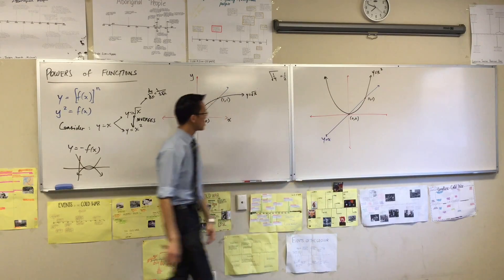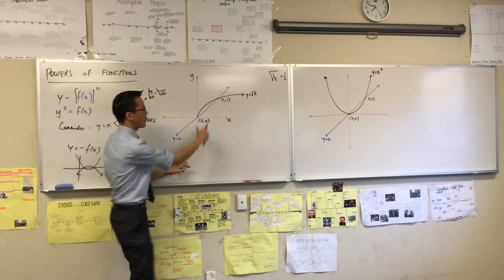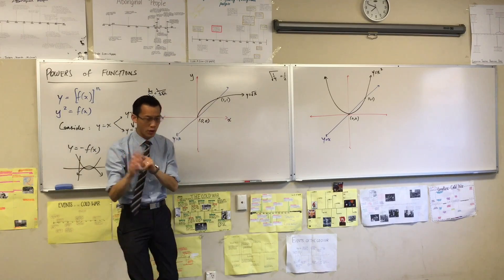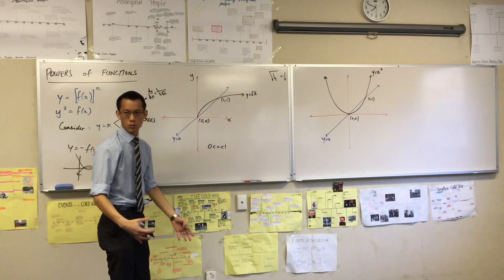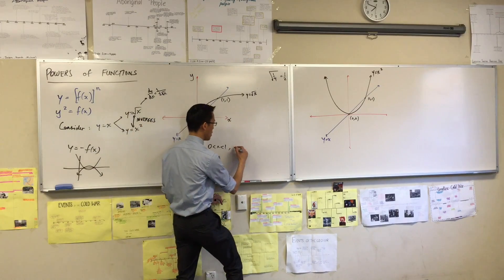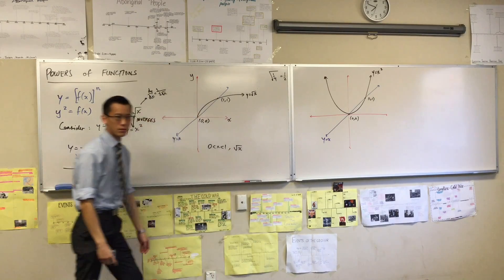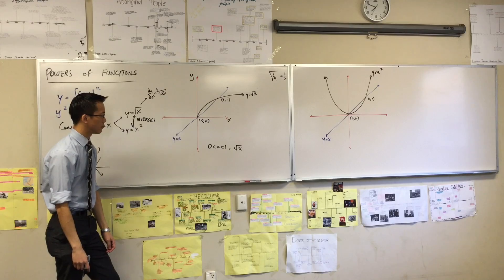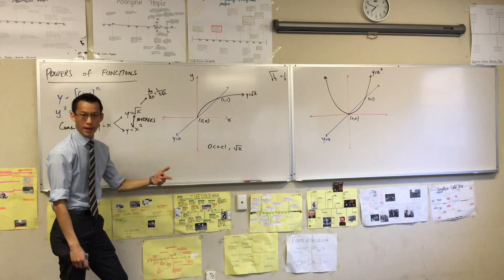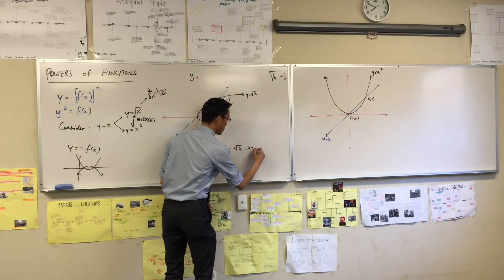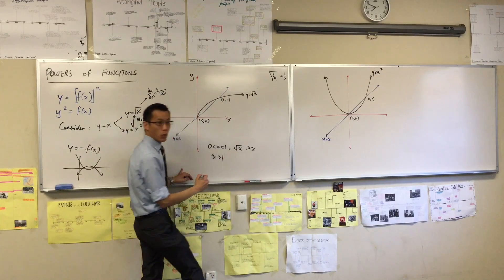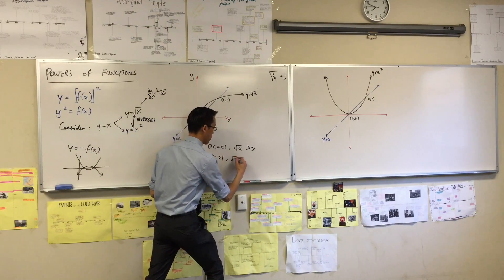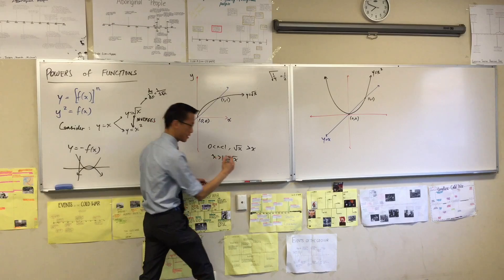One last thing I want us to notice. Here, we said if you have a value—in fact, this is probably worth writing down, right? For 0 < x < 1, the square root of x is going to be bigger than x. Do you agree with that? Whereas, for x > 1, the square root of x is less than x. It's smaller.